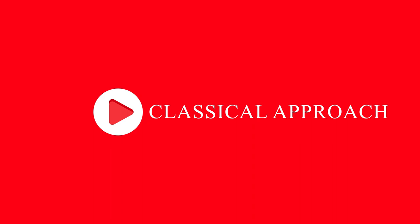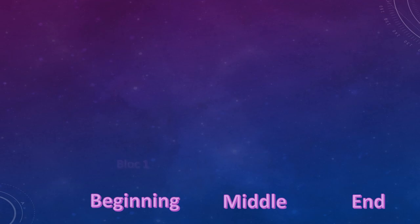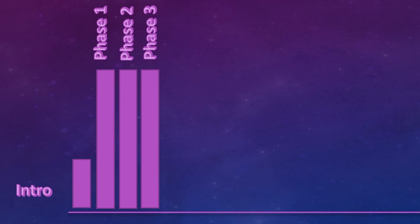When we structure a class, we have what we call the classical approach — what most instructors do. The structure is: beginning, middle, blocks one through four, final show, intro, and outro, with phase one, phase two, and phase three. Most people know how to do it, but the problem is they always use the same level of energy across all their phases. This is tricky, because if you always have the same energy level you don't play with the music and there is no story to tell.